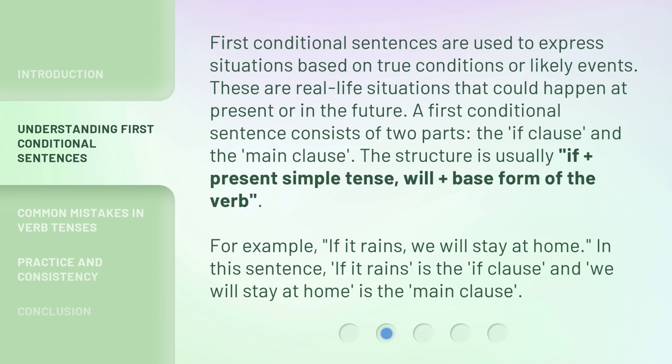First conditional sentences are used to express situations based on true conditions or likely events. These are real-life situations that could happen at present or in the future. A first conditional sentence consists of two parts: the if clause and the main clause.